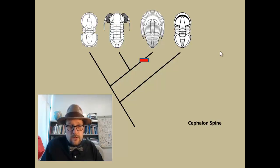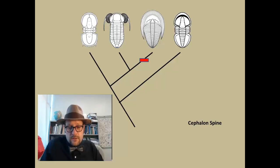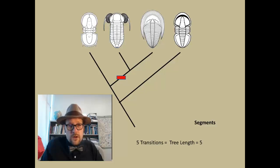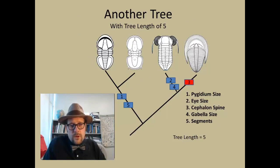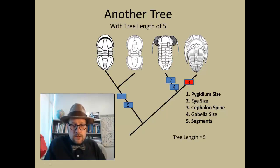For cephalon spine: the long cephalon spine this tree argues is actually a derived characteristic that evolved a second time — shown in red as a reversal. For the number of segments: this tree argues what we considered a primitive trait is actually derived and we may have mischaracterized its polarity. Going through all characters we have five transitions total. Here is another tree, also with a length of five.